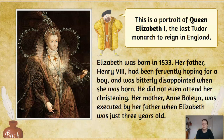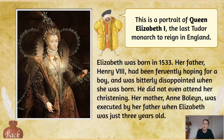Elizabeth was born in 1533. Her father, Henry VIII, had been hoping for a boy, as he had with all of his previous marriages, and he was bitterly disappointed when she was born — to the point where he didn't even attend her christening. Her mother, Anne Boleyn, was executed — beheaded — by Henry VIII when Elizabeth was just three years old. As a result, Henry then sought an annulment from his marriage to Anne Boleyn, which meant that Elizabeth became an illegitimate child, effectively a child from two parents who were not lawfully married.